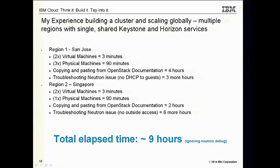Then I did it again — I got hardware in Singapore. Waited about 90 minutes for my bare metal to come up, then copied and pasted from the OpenStack documentation. I only had one machine to configure instead of three compute nodes, so it went a little faster — about two hours of work. Something happened with Neutron again; I spent about six hours before someone pointed out I just needed to restart my L3 agent and it worked. Ignoring the Neutron time, I had about nine hours in this total. When I was done, I had Horizon running as a multi-region install — one in Singapore, one in San Jose — with SSH into guests from external and Neutron running with GRE tunnels.